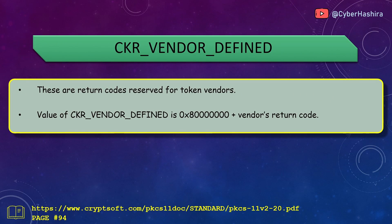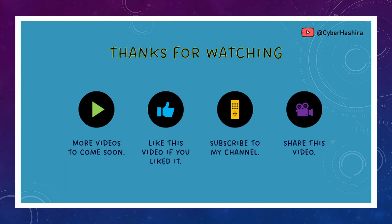Some hardware token vendors provide enhanced features as additions to the PKCS11 API. These enhancements may fail in certain situations, and vendor-defined codes are used to describe those failures. A vendor-defined return code value is 0x80000000 plus a vendor code.